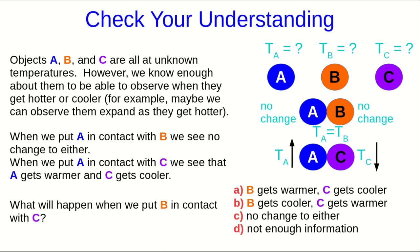And if A warms up and C cools down when they're put in contact, then A must be cooler than C, or TA is less than TC. And TA and TB are the same, so TB must also be less than TC. So when we put B and C in contact, B must get warmer and C gets cooler.